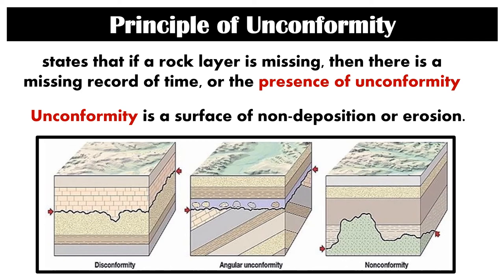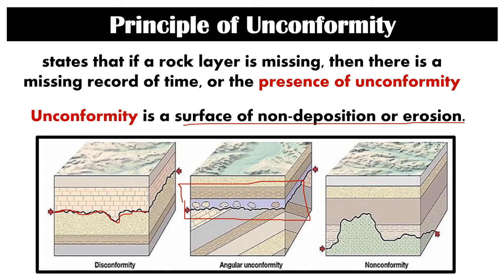The next principle is the principle of unconformity. This states that if a rock layer is missing, then there is a missing record of time, or the presence of unconformity. With this principle, more than identifying which rock layer is older or younger, we look at why there is a gap in the rock layers — meaning a rock layer is missing. This is because of the presence of unconformity, which is a surface of non-deposition or erosion. There should be a rock layer there, but it was eroded, or no deposition occurred in that location.